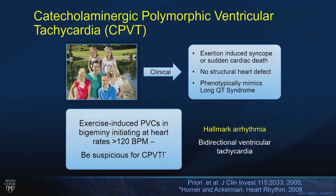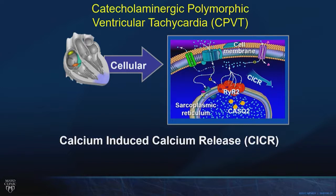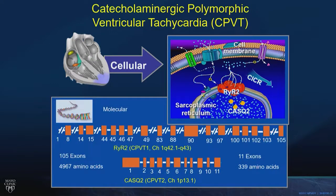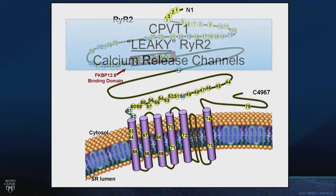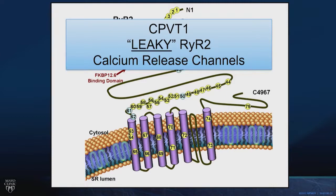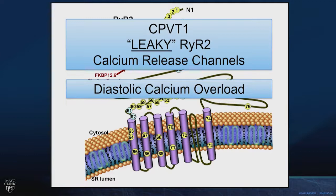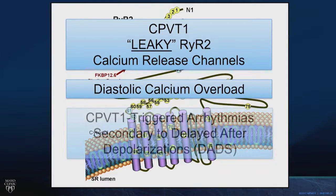CPVT is a disease of calcium-induced calcium release. We order the genetic test to look for mutations in one of the largest genes, RYR2, that encodes the ryanodine receptor subtype 2 — also called the calcium release channel. Mutations are scattered stem to stern and render the ryanodine receptors on the SR leaky. These leaky ryanodine receptors cause diastolic calcium overload, resembling digoxin toxicity.